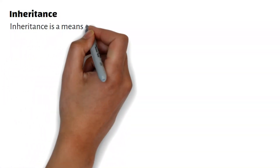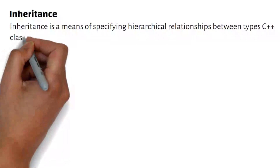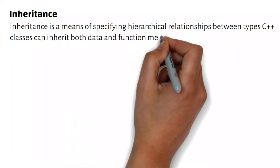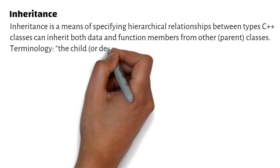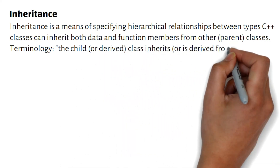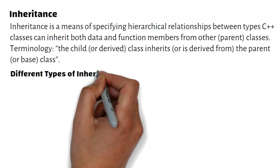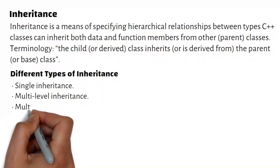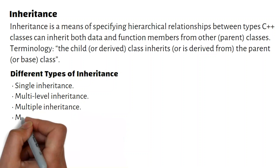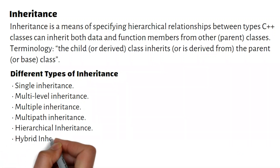Inheritance is a means of specifying hierarchical relationships between types. C++ classes can inherit both data and function members from other parent classes. The child, or derived, class inherits from the parent, or base, class. Different types of inheritance include: single inheritance, multi-level inheritance, multiple inheritance, multipath inheritance, hierarchical inheritance, and hybrid inheritance.